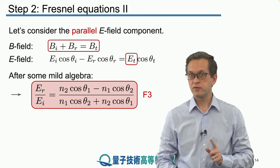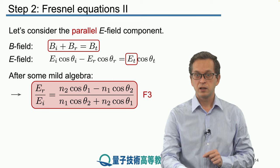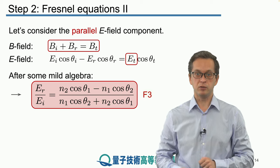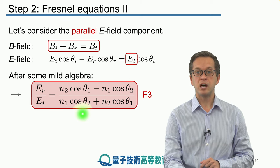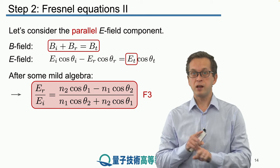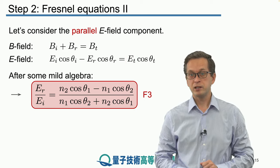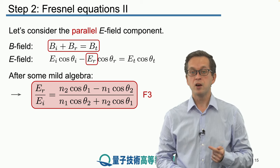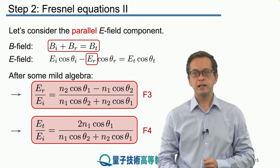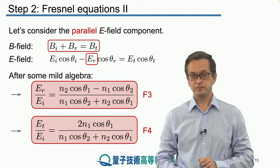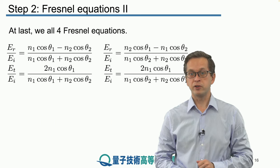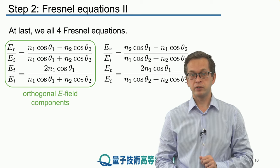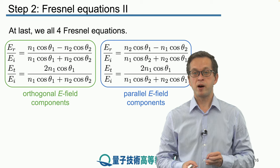For the parallel components, ER over EI is given by Fresnel's third equation. This looks similar to Fresnel's first equation, but be careful — they are indeed different. In F1 we had N1 cos θ1 minus N2 cos θ2 in the numerator; here the angles are swapped. Similarly, substituting for the reflected field to find ET over EI gives Fresnel's fourth equation, which also looks similar to F2 but is different. Here are all four Fresnel equations: the left column is for orthogonal E field components, the right column for parallel E field components.